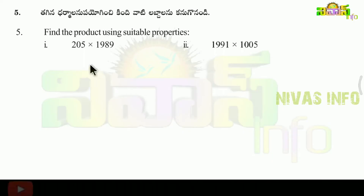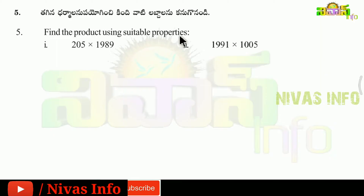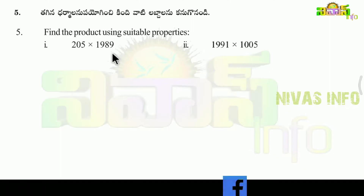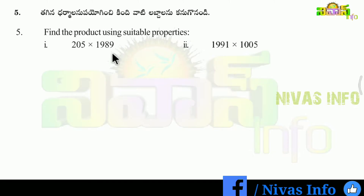Next question, fifth question: find the product using suitable properties. Here we have two numbers. What property is called? Commutative property. What is the commutative property? It can change the places of the numbers.